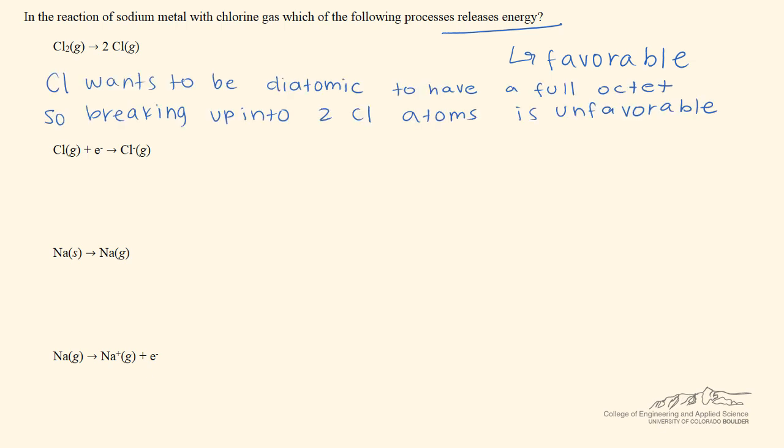To summarize, chlorine wants to be diatomic to have a full octet, so breaking up into two chlorine atoms is unfavorable. This reaction does not release energy.